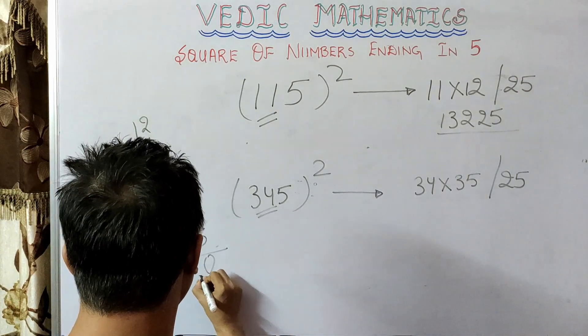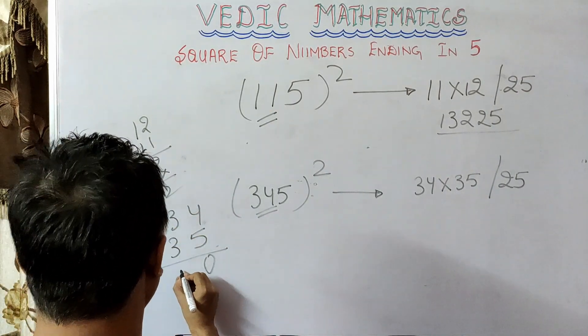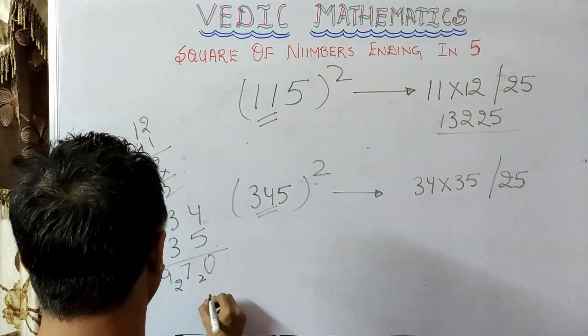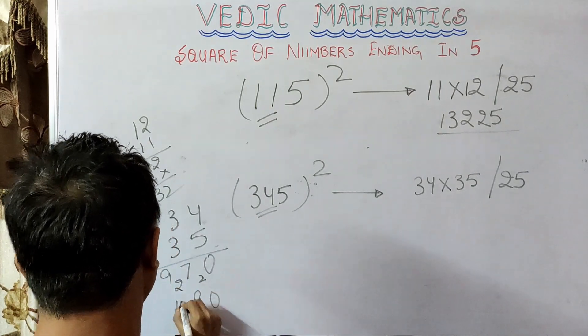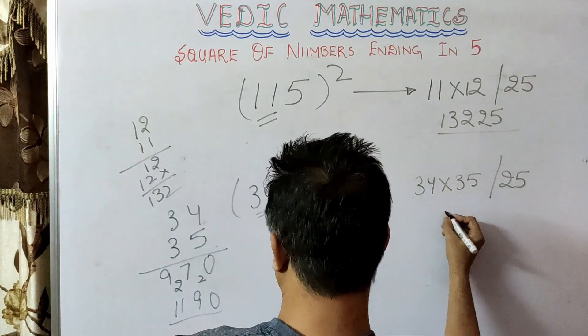3 fours are 12, 15, and 12 is 27, and then 9. So this method we will share in another video. So you have